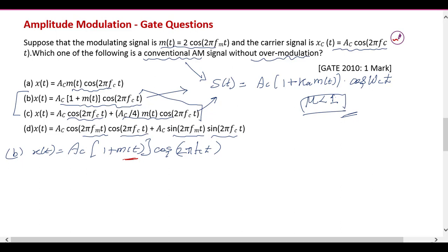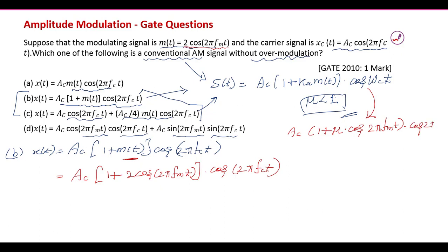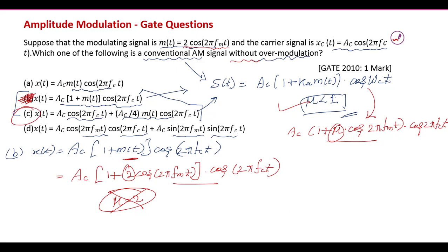Checking option B: substituting m(t) = 2cos(2πF_M t), the expression becomes A_C [1 + 2cos(2πF_M t)] cos(2πF_M t). Comparing with A_C [1 + μ cos(ω_M t)] cos(ω_C t), the modulation index μ = 2. Since the question requires no over-modulation (μ < 1), option B is not valid.